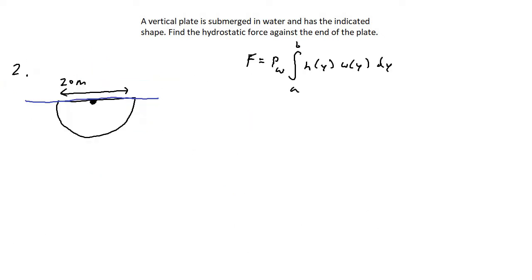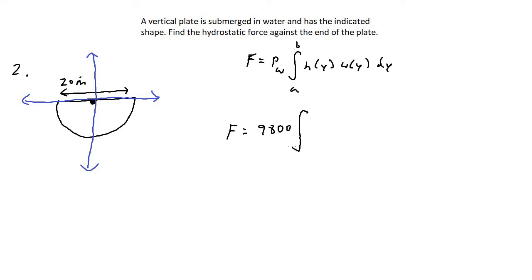For number two, we have a half circle with a diameter of 20 meters, and the top of the tank is exactly at water level. Since we're in meters, the weight density is 9,800 newtons per cubic meter. The diameter is 20, so the radius is 10 meters, and we integrate from negative 10 to 0. For the height equation in terms of Y, we're going a vertical distance below the x-axis, so it's negative Y.